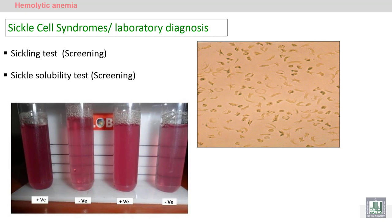The sickling screening test involves adding a reducing material that increases sickling and increases the number of sickle cells in the peripheral blood smear. As you can see here, the majority of the cells in the sickling test are sickle cells. We also use the solubility test, knowing that hemoglobin S is insoluble.